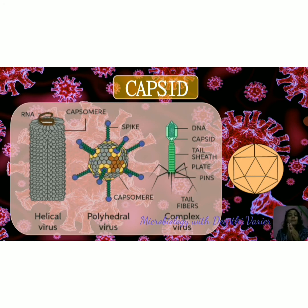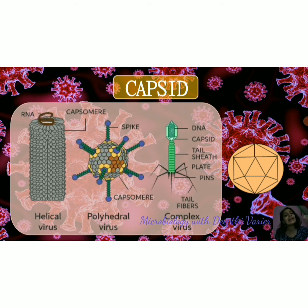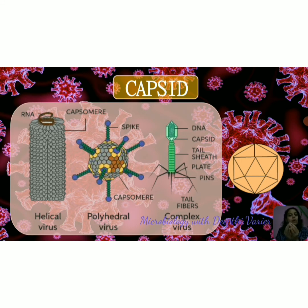When capsomeres coil around an axis in a spiral fashion, the final particle looks like a rectangular or cylindrical molecule — so the symmetry is helical but the shape of the virus is cylindrical or rectangular. In the same way, polyhedral — also called icosahedral — capsid symmetry is as shown here: it is made up of 20 facets or sides, each being an equilateral triangle. Counting them: ten on one side and ten on the other, giving 20 equilateral triangles. Viruses with icosahedral symmetry tend to be spherical in shape.